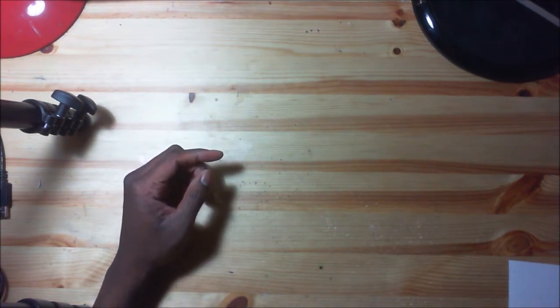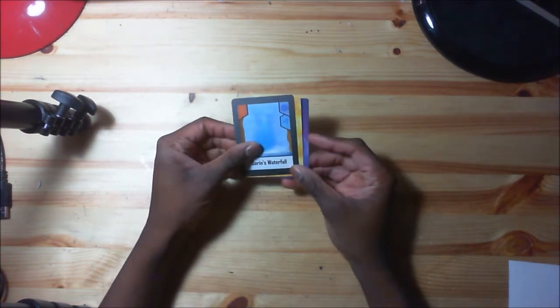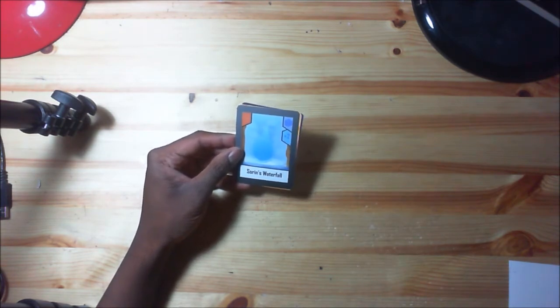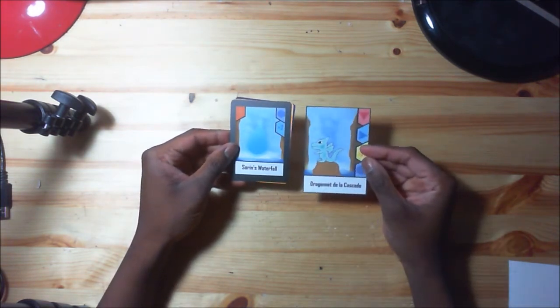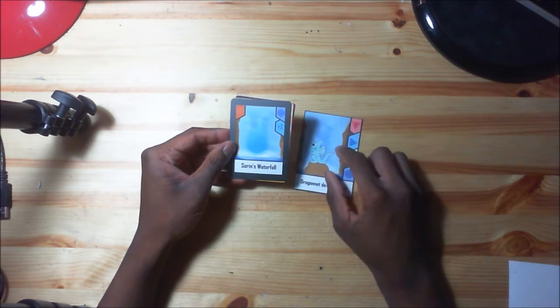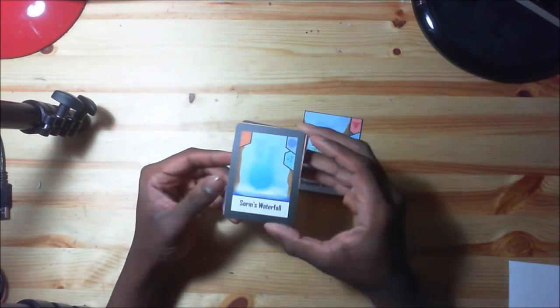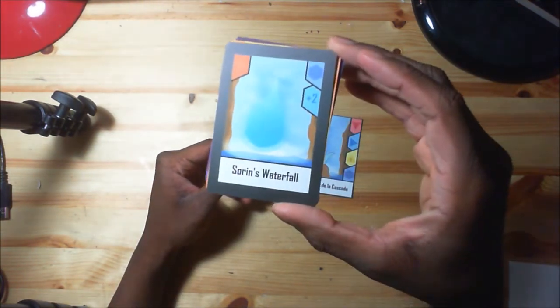So first of all we have new cards such as Saran's Waterfall which is just like the little waterfall dragon. It's the same actually, it's the background from the little waterfall dragon but with some water here with a water drop.